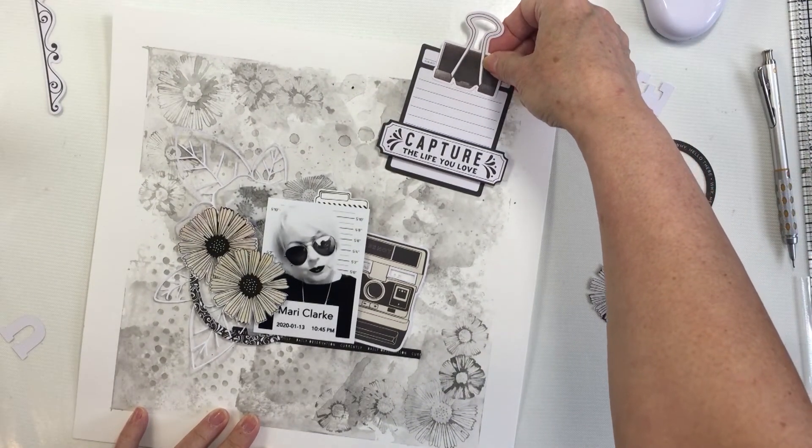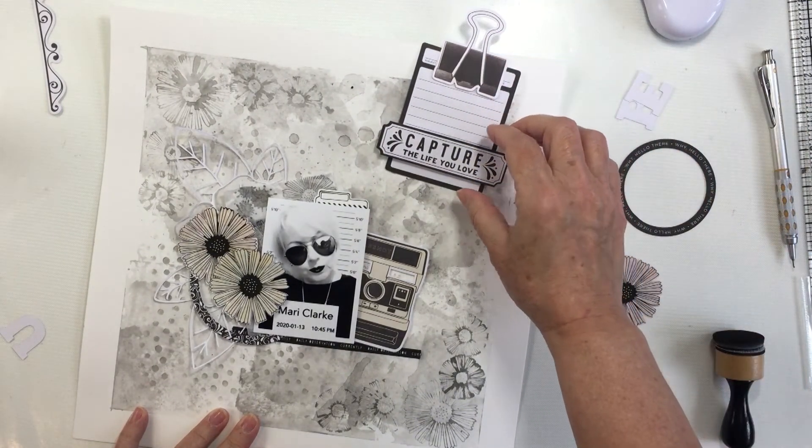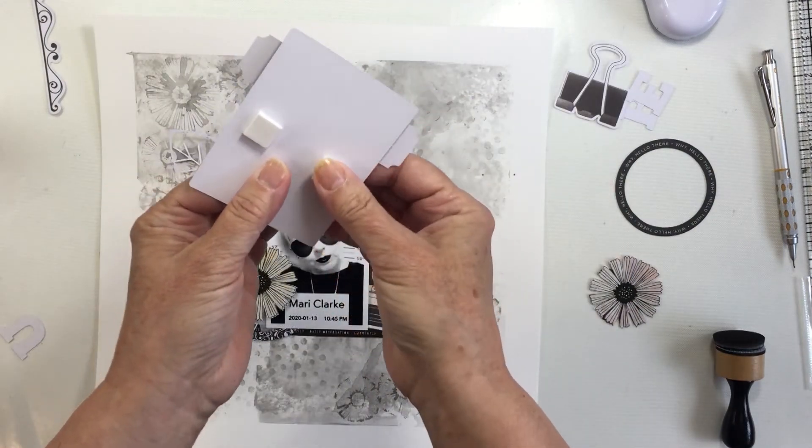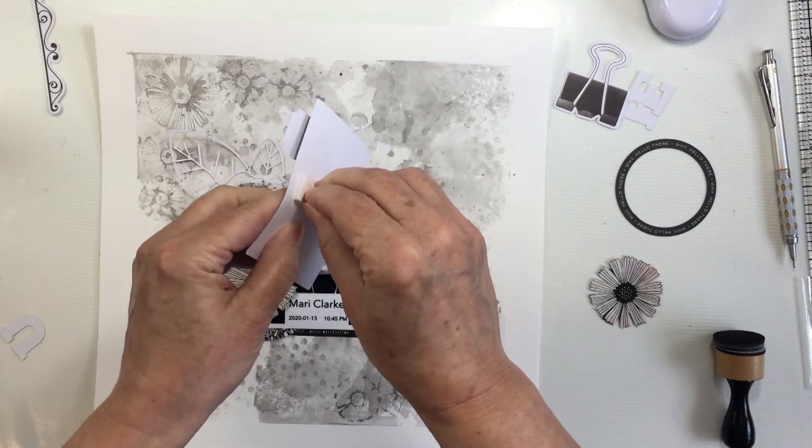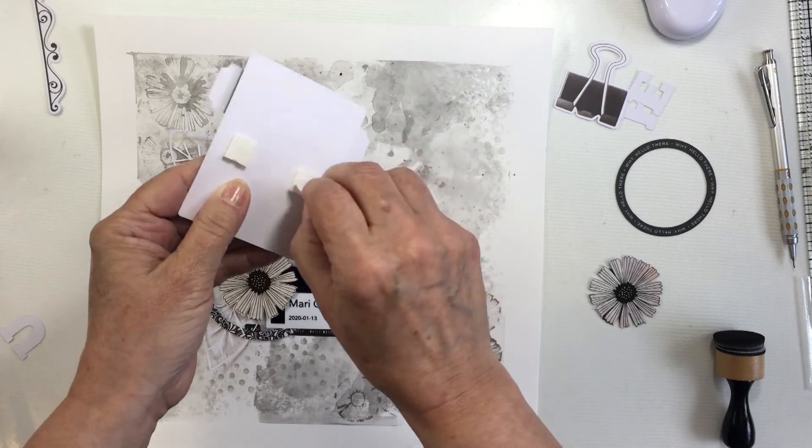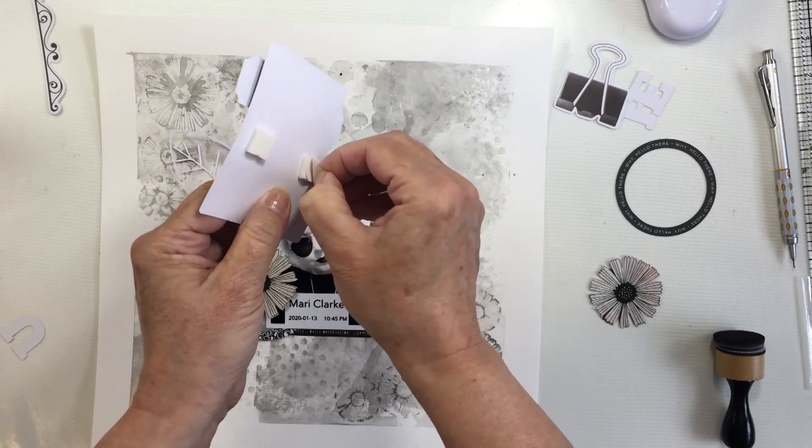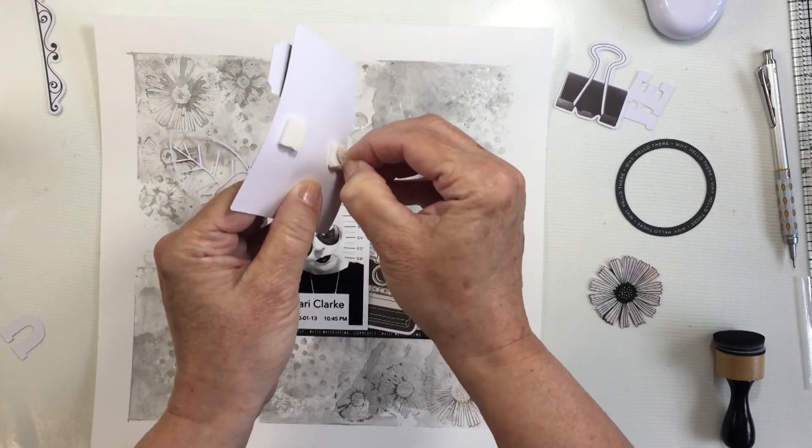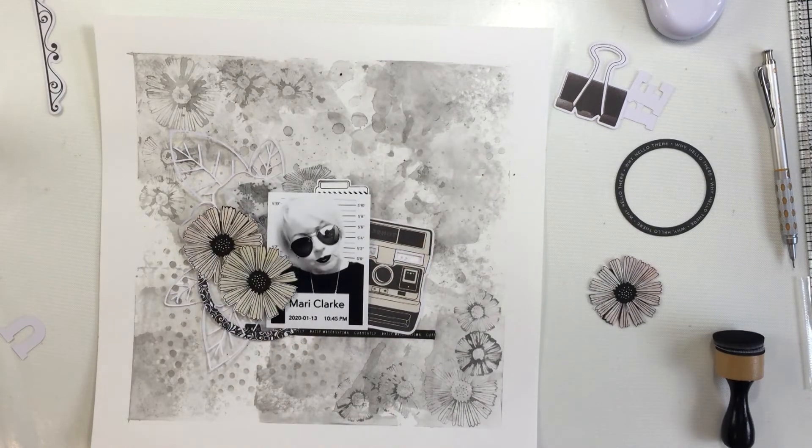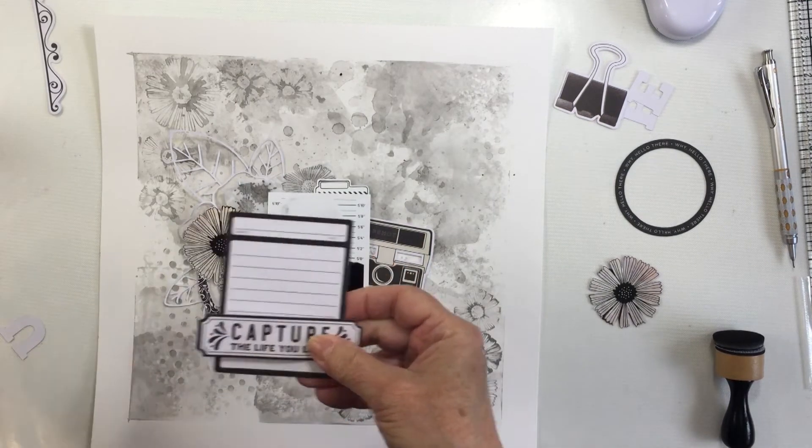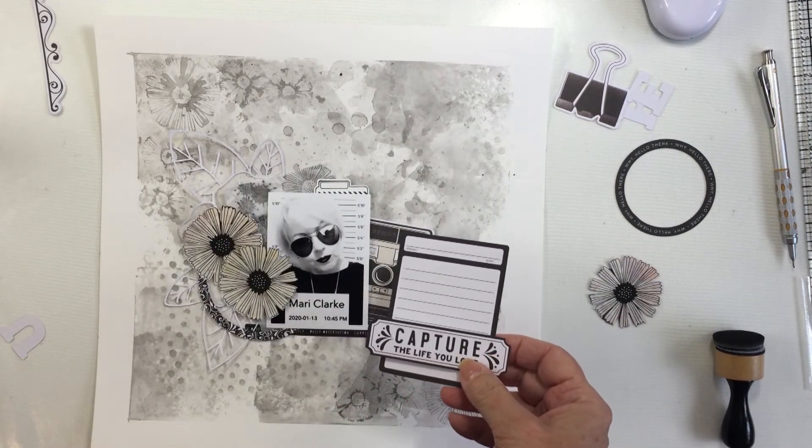I really love this die cut paper clip or large bulldog clip piece. I'm going to include that on that journaling card as well. It is going to poke up off the edge of the paper, so in the still shots of the photo you can't see the top of that clip but that's okay. I just like how it sticks up off the edge of the paper, I think that looks really cool.